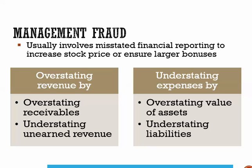Fraudulent financial reporting is achieved when management does the following: they overstate revenues by overstating receivables related to revenue that has not yet been earned, or by understating unearned revenue — meaning recording revenue when cash is received even though goods or services have not yet been provided. They also understate expenses by overstating the value of assets such as inventory, equipment, and buildings, recording assets that don't exist, or understating amounts owed to suppliers, employees, or creditors.